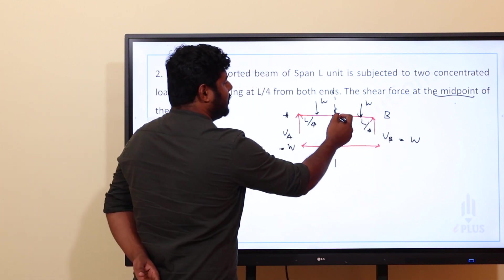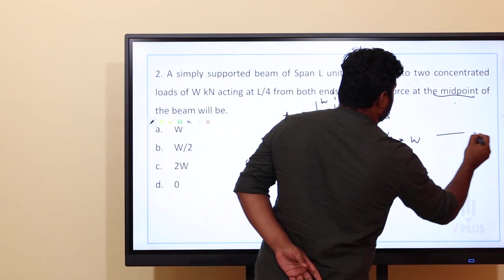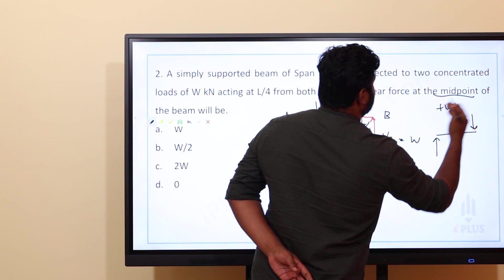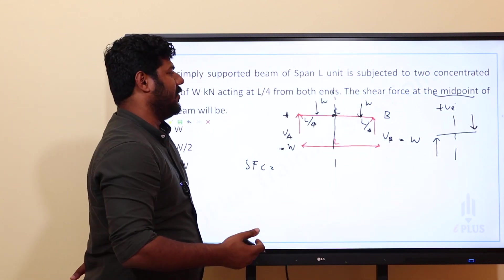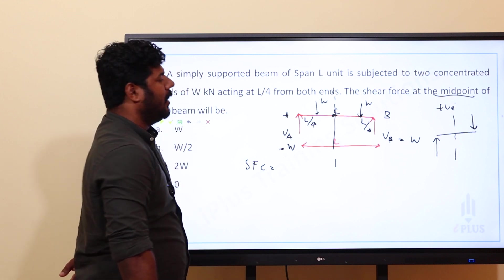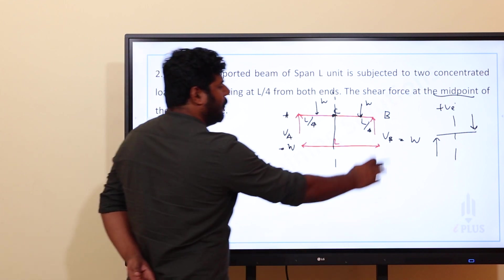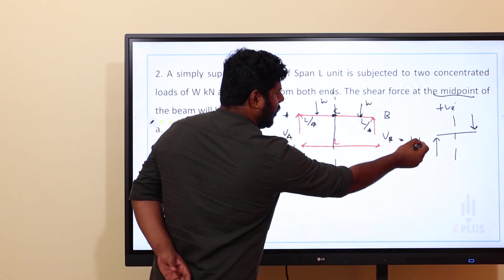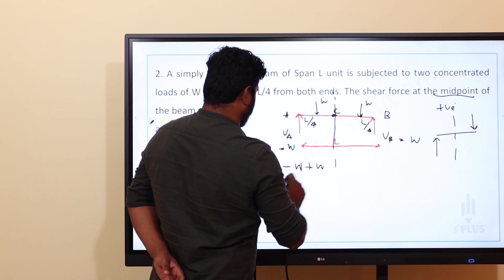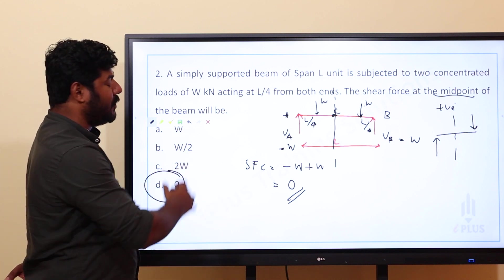The shear force at C on the right side is the algebraic sum. The sign convention: on the right side, downward forces are positive and upward forces are negative. So we have reaction VB upward minus W downward, which gives VB minus W. Here the upward and downward values cancel, giving shear force value zero.